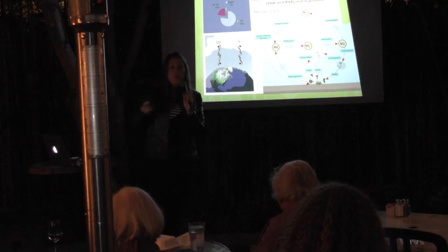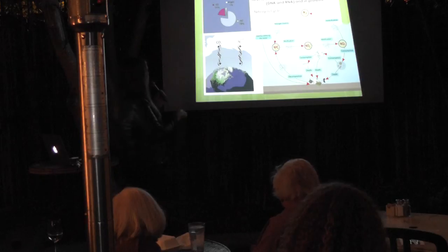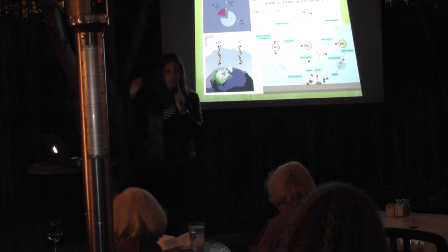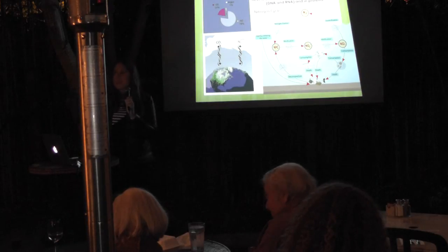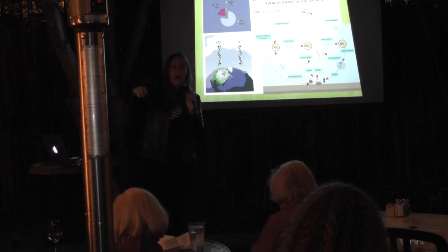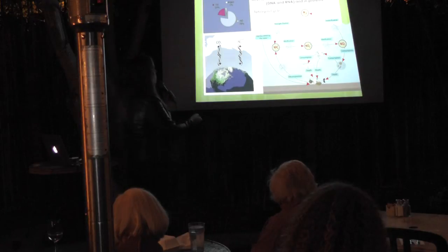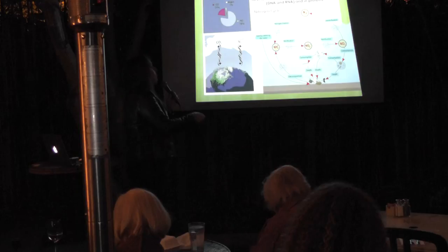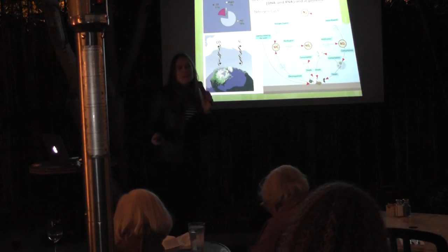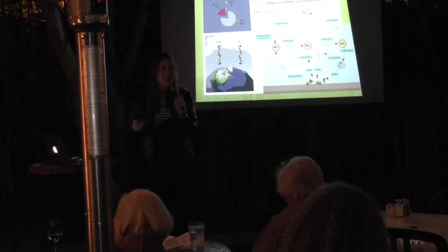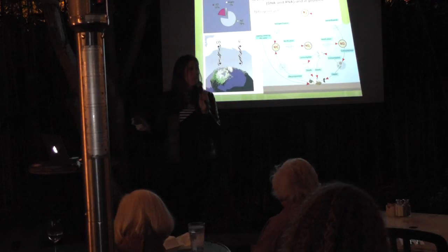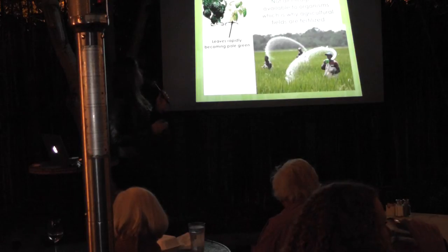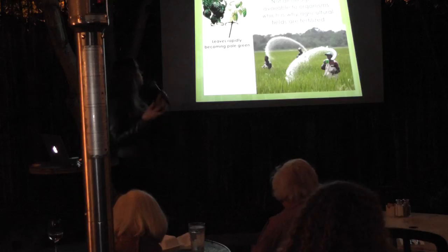The air we breathe is made up of 78% nitrogen, 1% argon, and 21% oxygen. There is a lot of nitrogen in the atmosphere, and also a lot in the water because nitrogen diffuses across the sea surface into the water. This nitrogen transforms to another form of nitrogen through cycles — this is called the marine nitrogen cycle. This is very important because nitrogen makes up all the nucleosides, the DNA and RNA in our cells, and the proteins. We need nitrogen. But not all nitrogen is available to organisms, which is why agricultural fields are fertilized.